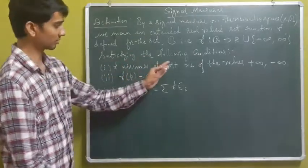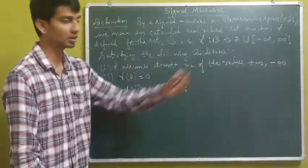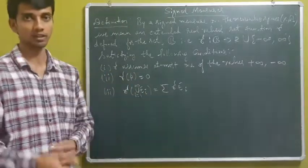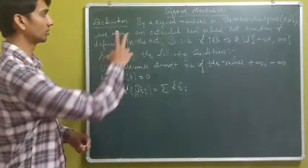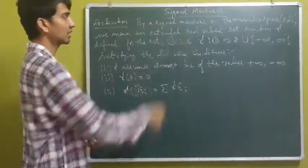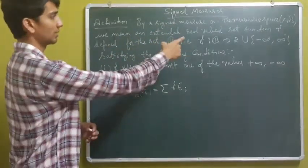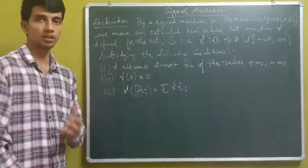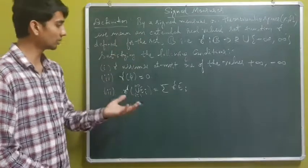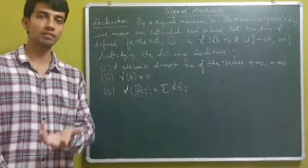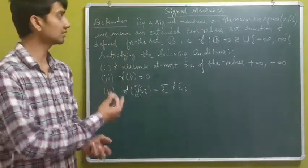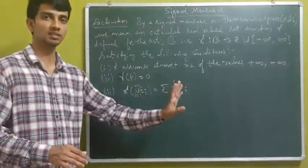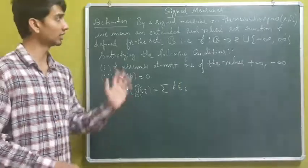So we have three conditions: it must assume at most one of the values of plus or minus infinity, the measure of the empty set should be zero, and it satisfies countable additiveness. This gives us an extended real-valued set function satisfying these three conditions as the definition of signed measures.